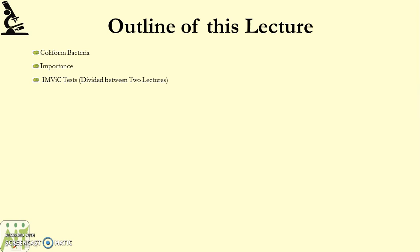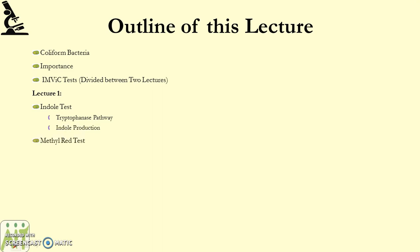The IMViC tests are very broad — it's a series of five tests used to identify coliform bacteria. Because they're so broad, we're going to break it down into two lectures. In lecture one we're going to cover the indole test, including the tryptophanase pathway and indole production, and also the methyl red test, which includes fermentation and acid production. In lecture two we'll move on to the Voges-Proskauer test and the citrate test.